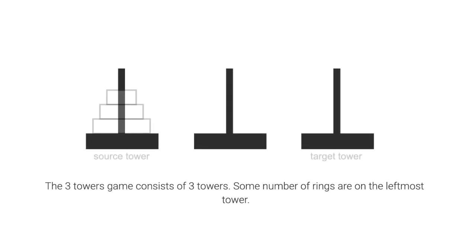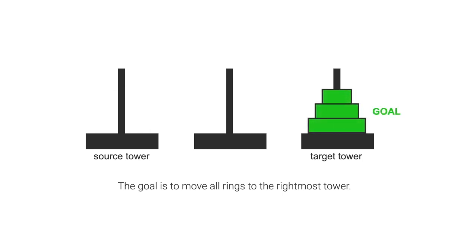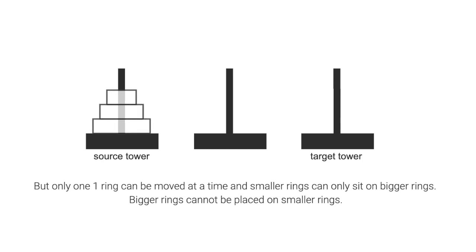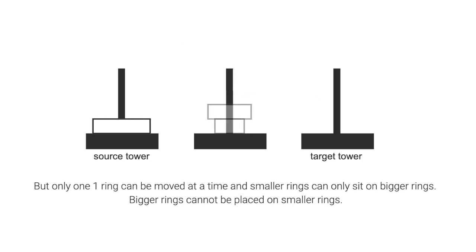The Three Towers game consists of three towers. Some number of rings are on the leftmost tower. The goal is to move all rings to the rightmost tower. But only one ring can be moved at a time, and smaller rings can only sit on bigger rings. Bigger rings cannot be placed on smaller rings.